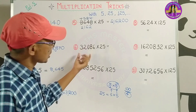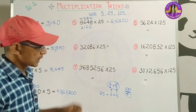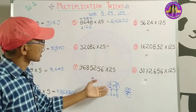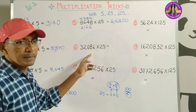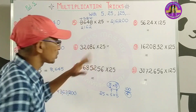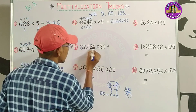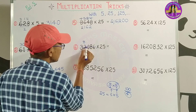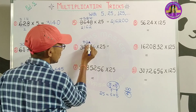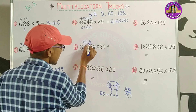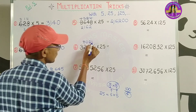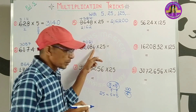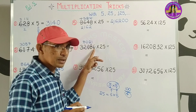The answer is 42. We have 4 eights are 32, 4 zeros are 0, 4 twos are 8, 4 ones are 4. So we have 2 zeros.